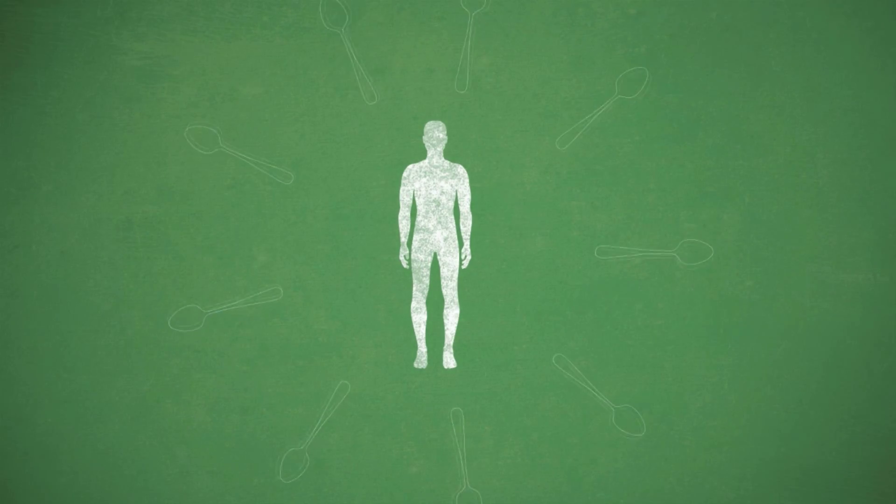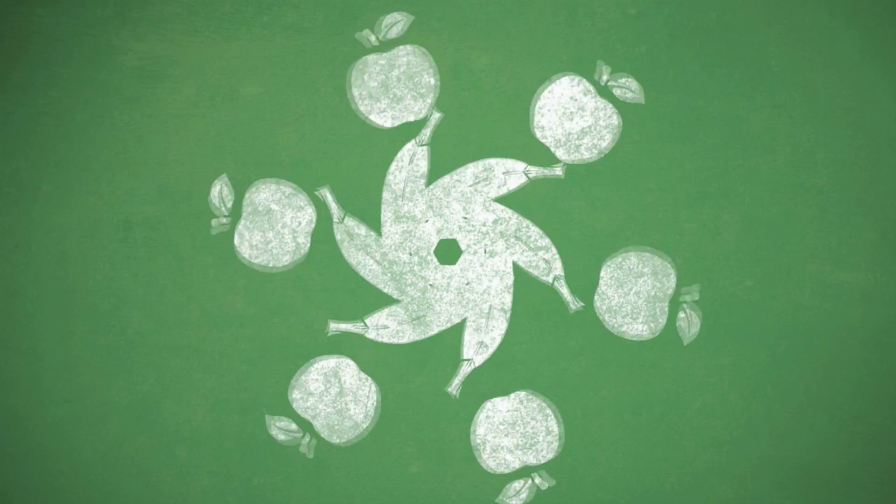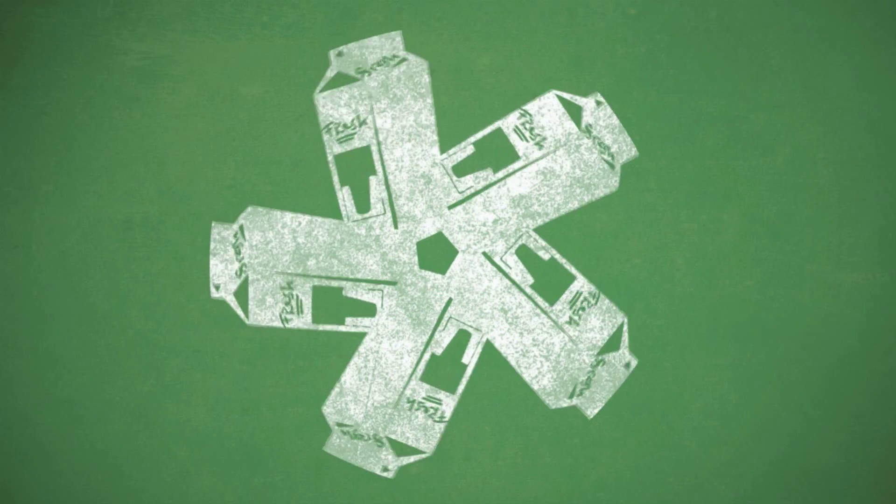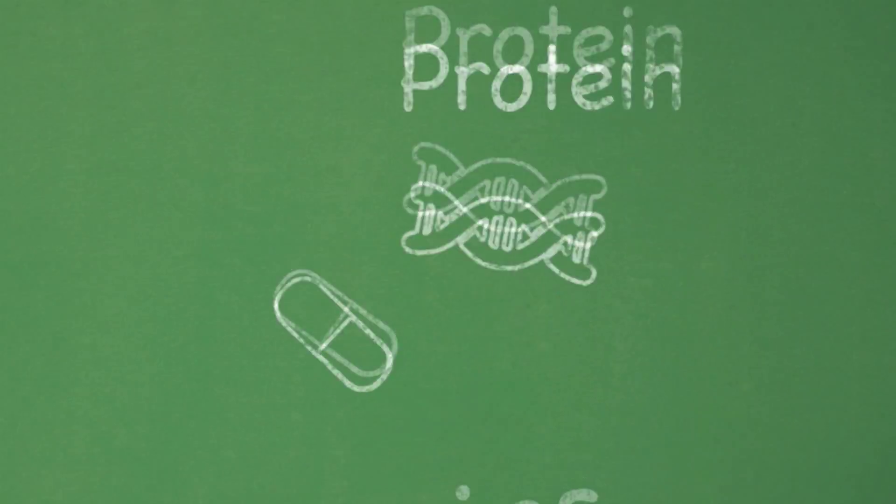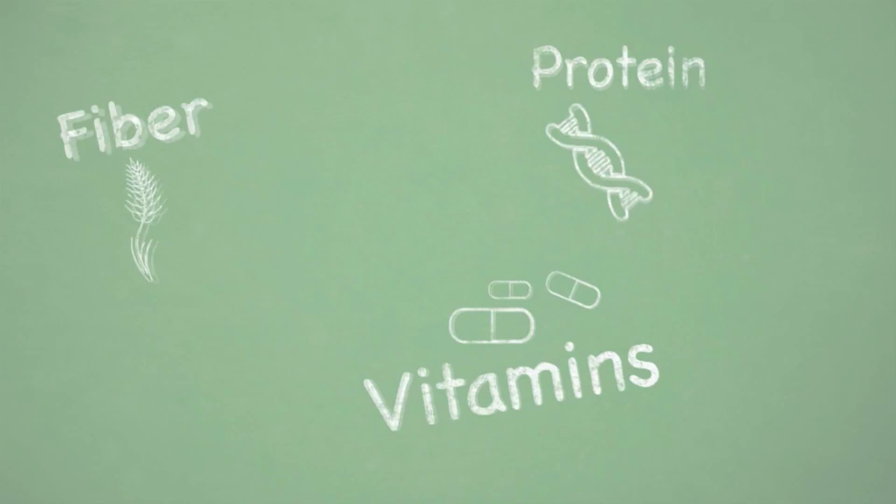And if your sweet tooth is calling, go naturally sweet. Fruit, which contains the natural sugar fructose, and milk, which has lactose, don't count toward your added sugar limit. Plus, they have fiber, protein, and vitamins. Now that's the real icing on the cake.